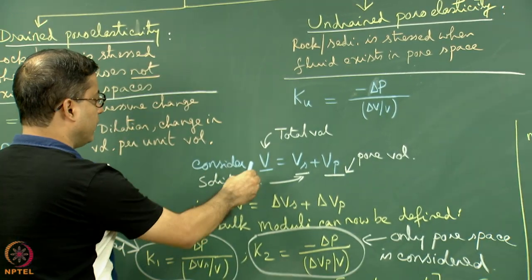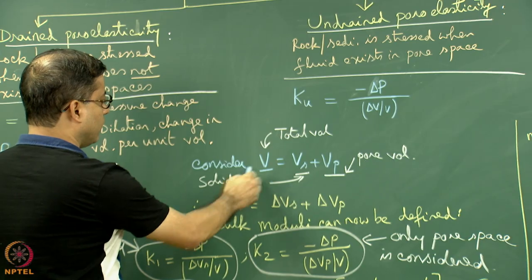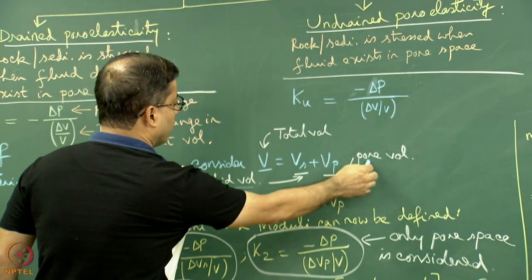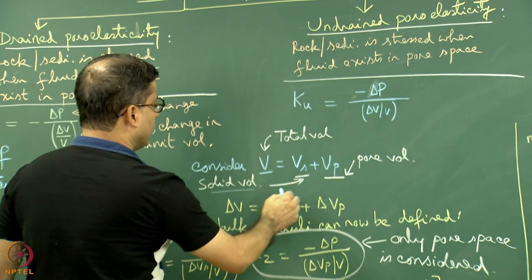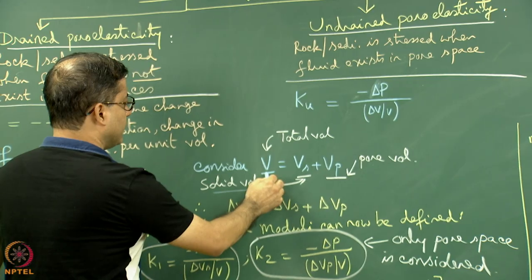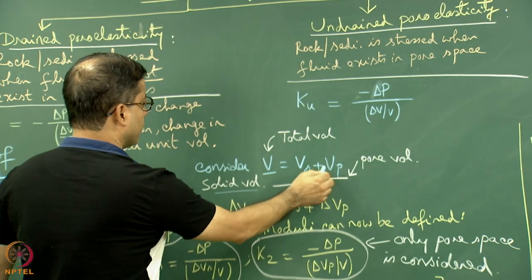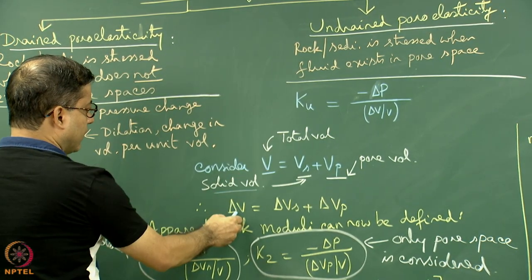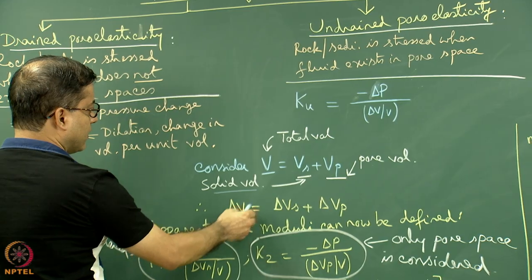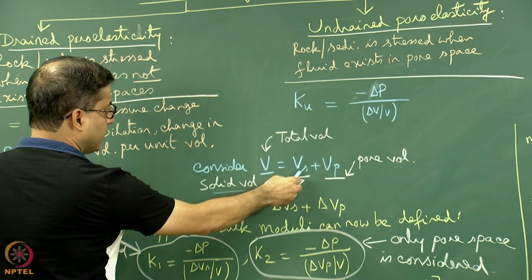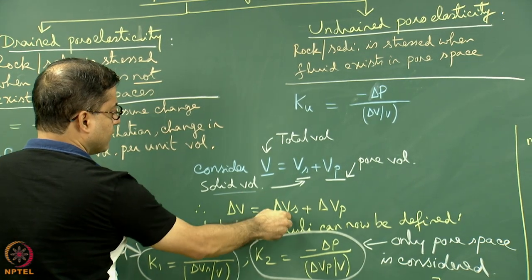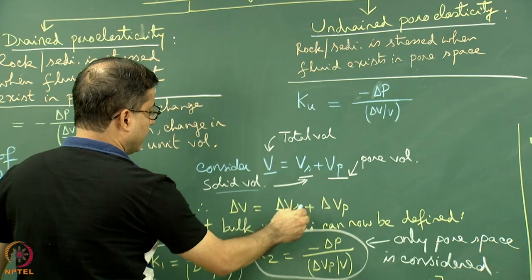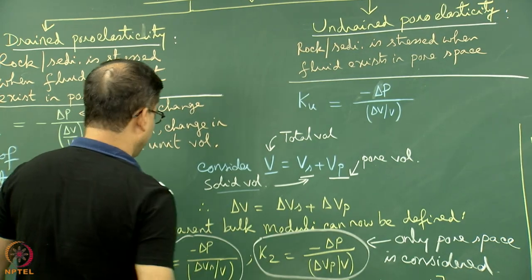Consider a volume V of rock where the solid volume is Vs and the pore volume is Vp. Obviously V equals Vs plus Vp. Therefore, the change in V can be written as the sum of the change in Vs and the change in Vp: delta V equals delta Vs plus delta Vp.